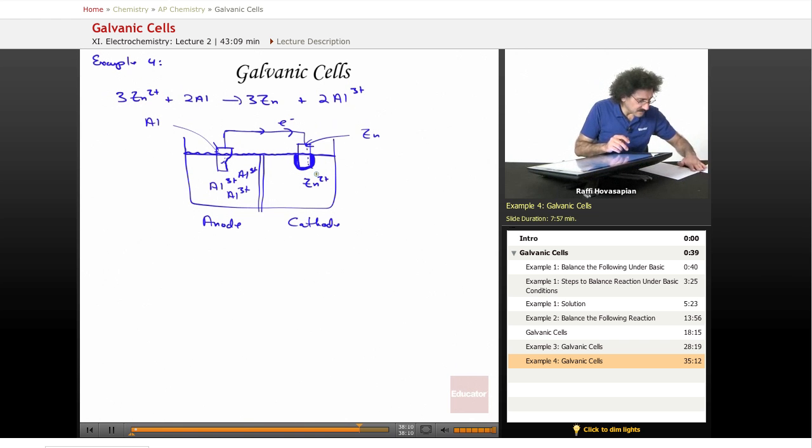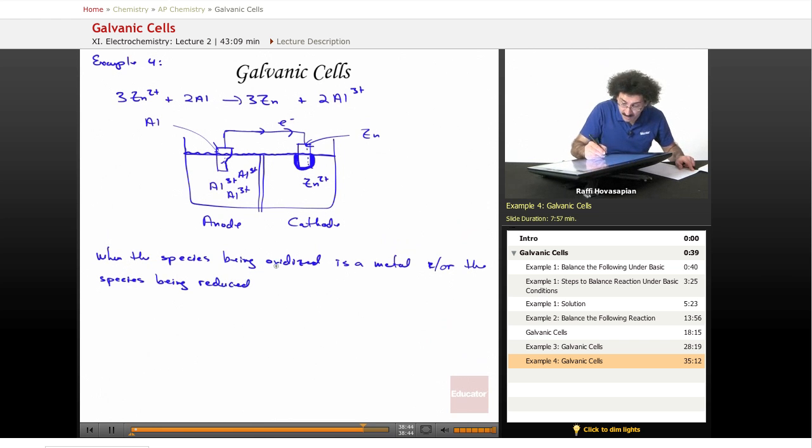When aluminum gives up its electrons, it turns into aluminum ion. So now aluminum ion is going into solution. The metal is turning into the ion. Here the zinc ion is turning into the metal. So when the species being oxidized is a metal and or the species being reduced becomes a metal, we can go ahead and use those metals as the electrodes. The electrodes can be the metals themselves.